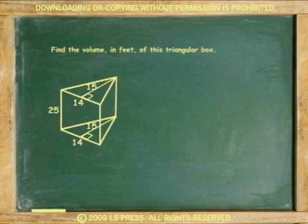Another example, find the volume in cubic feet of this triangular box. The box is in the shape of a triangular prism. Two heights are found. One for the triangular base, 15, and the second one for the length of the prism itself, 25.